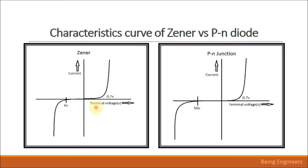In the xenon diode, the breakdown voltage is very low compared to the PN junction diode. You can see it is 6 volts here — there are also 5 volt and 7 volt xenon diodes. This is a 6 volt xenon diode, meaning whenever the terminal potential exceeds 6 volts, current starts flowing in the reverse direction and the potential difference across the terminal will remain at 6 volts when connected with a series resistance. That is the xenon voltage — and that is the key difference between xenon diode and PN junction diode characteristics.